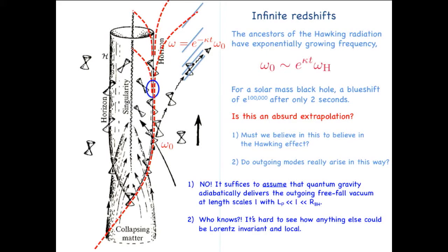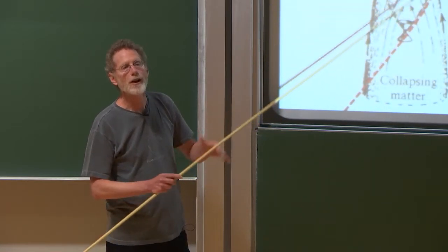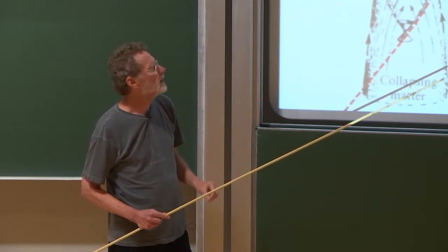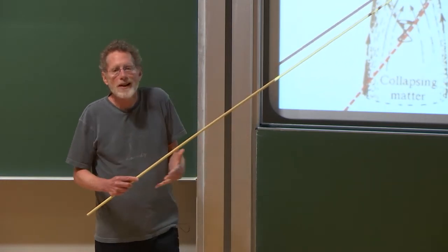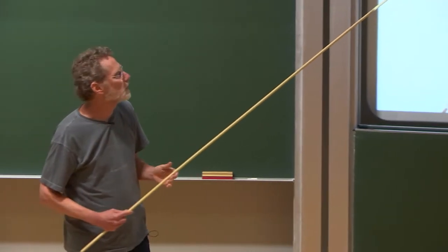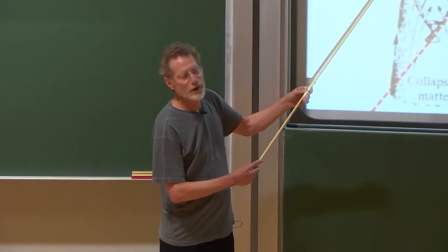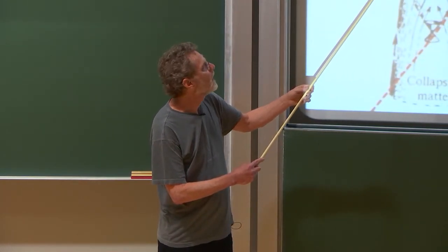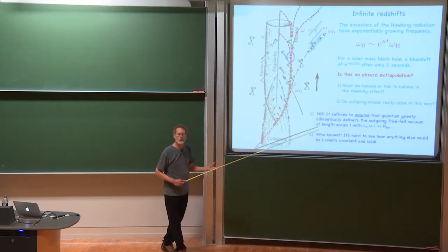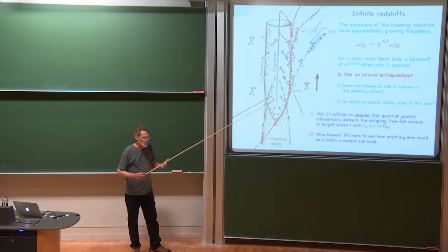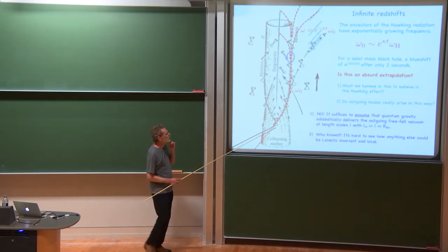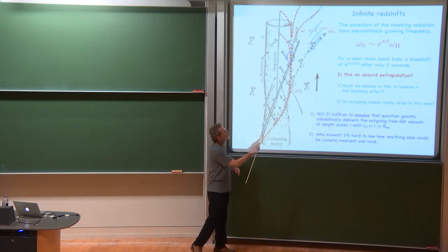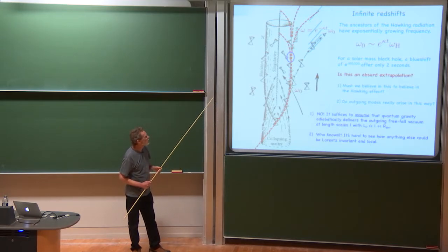And then at that scale, we can assume, we have to assume some condition, we can assume that whatever quantum gravity is, it adiabatically delivers the outgoing free-fall vacuum inside this blue circle or ellipse at the scales that I just described. So it's a natural assumption because these tiny scales I'm talking about see this space-time of collapse as just a constant background. The time scale of the collapse is eons compared to a Planck time. So if the adiabatic theorem somehow applies in quantum gravity, it's natural to suppose that what we have here is the outgoing vacuum. And that's all we need to get the Hawking effect.